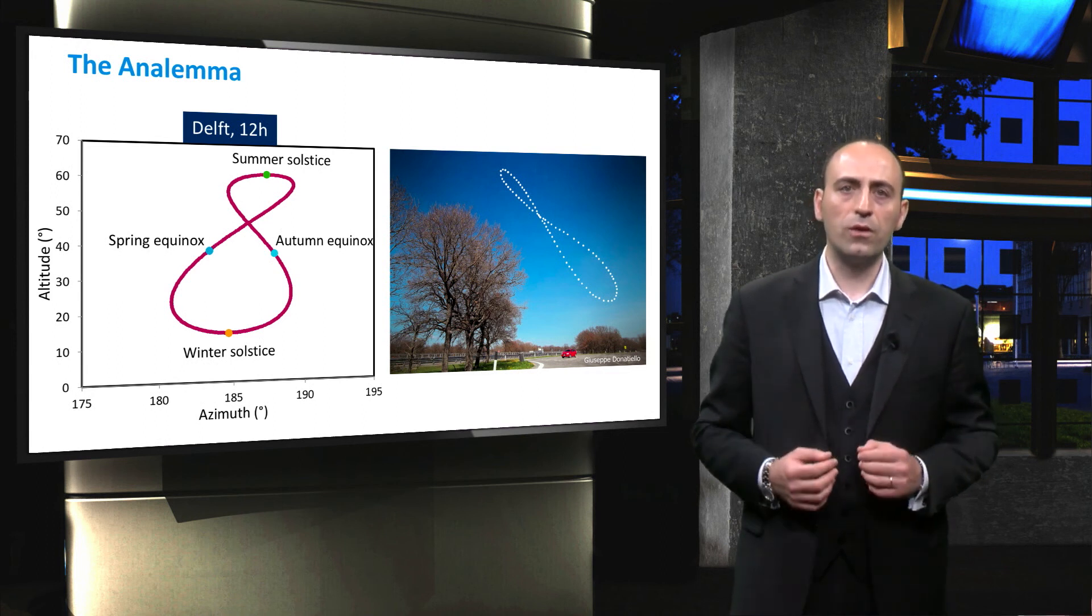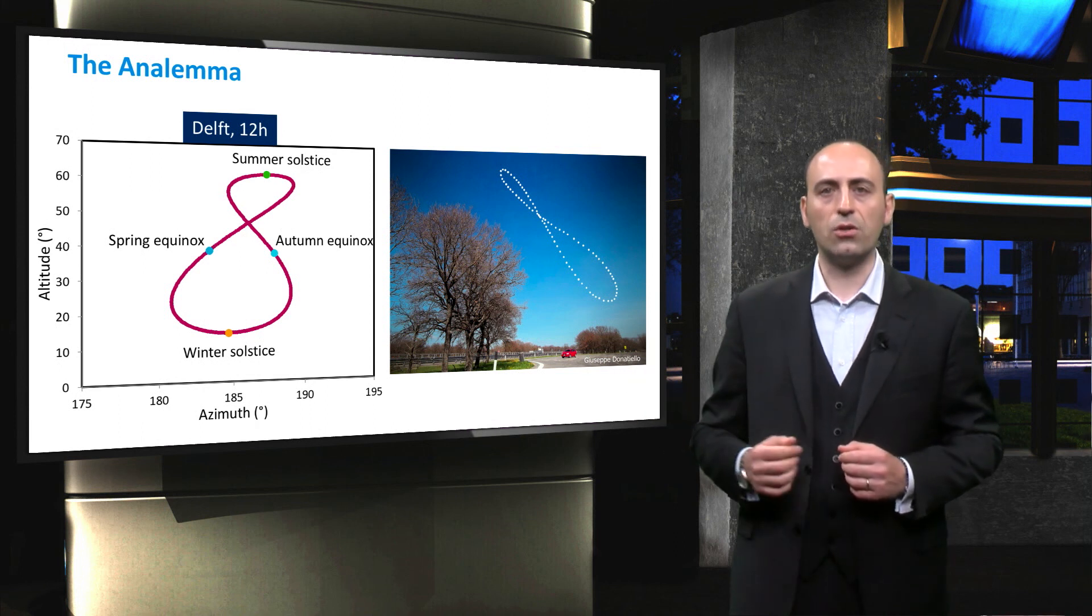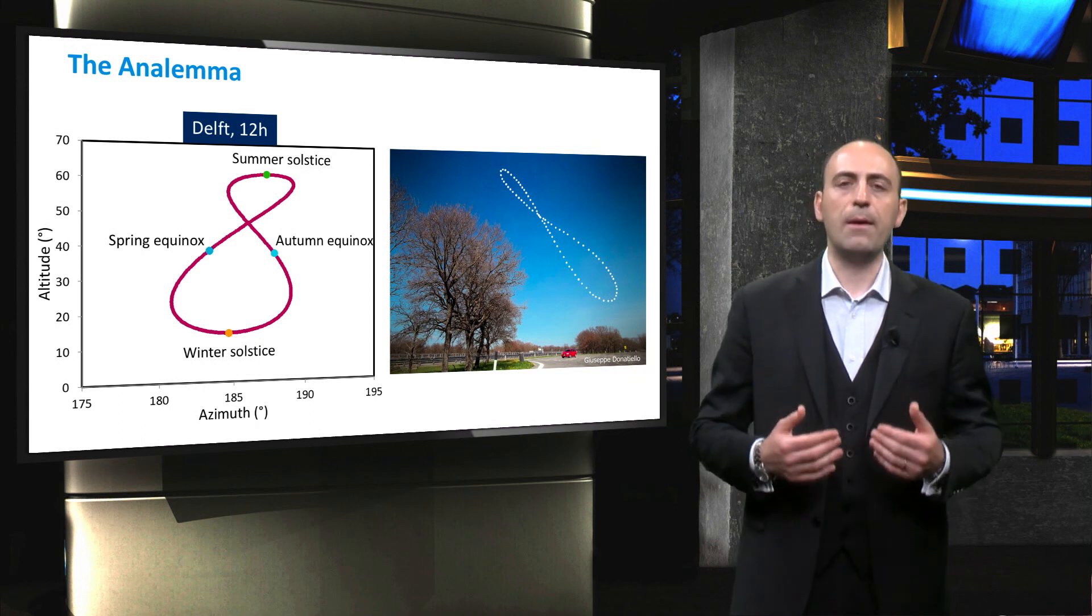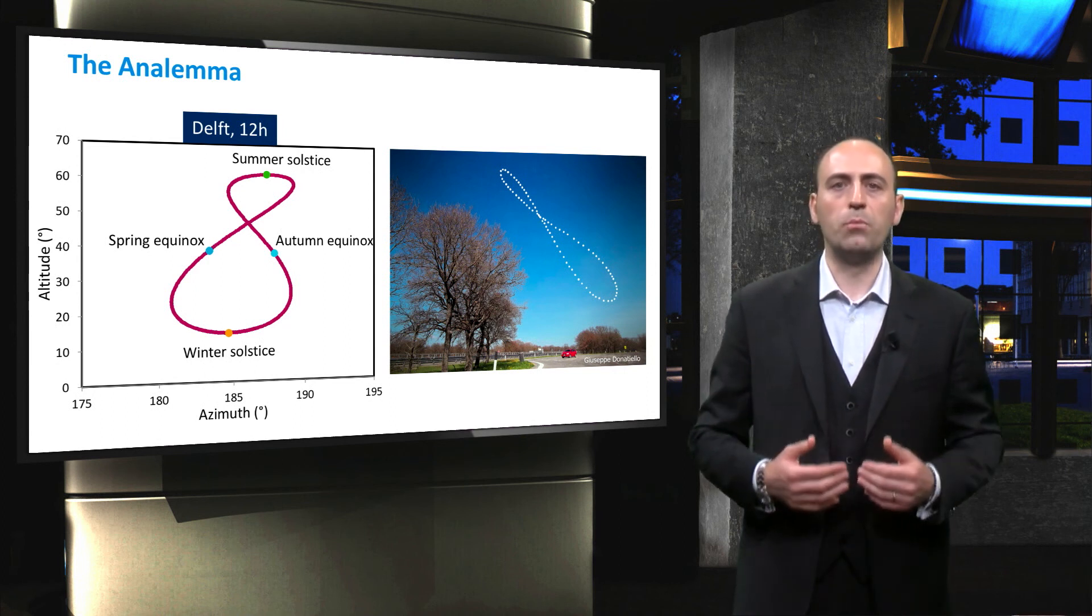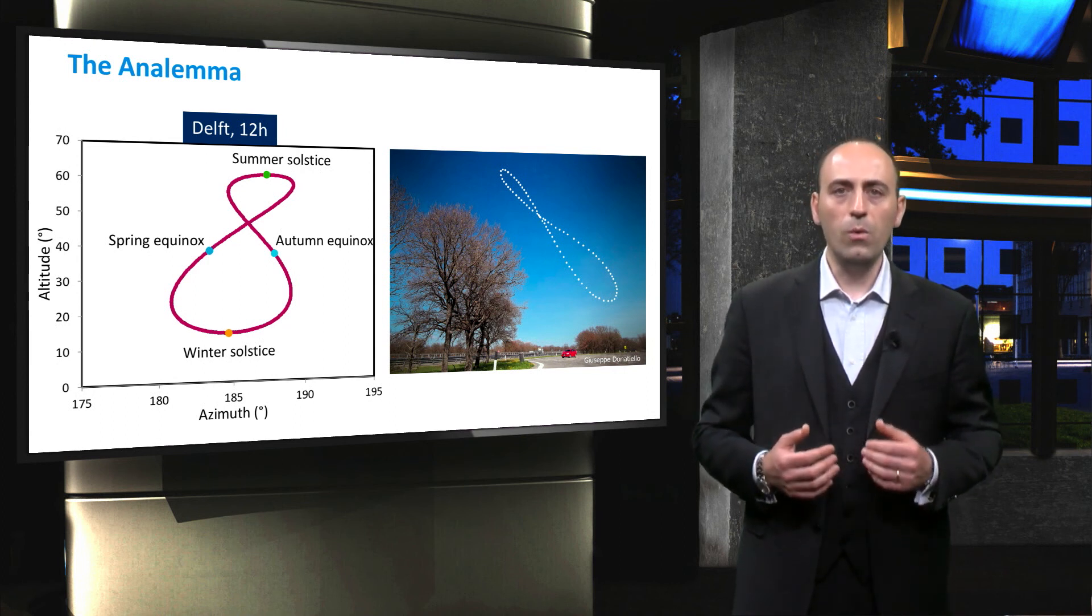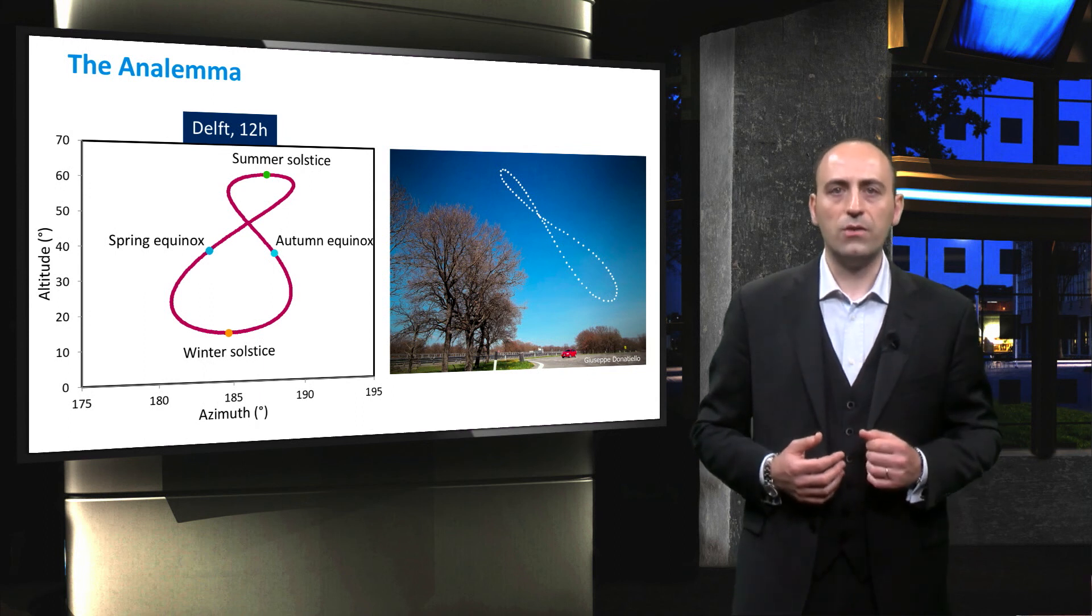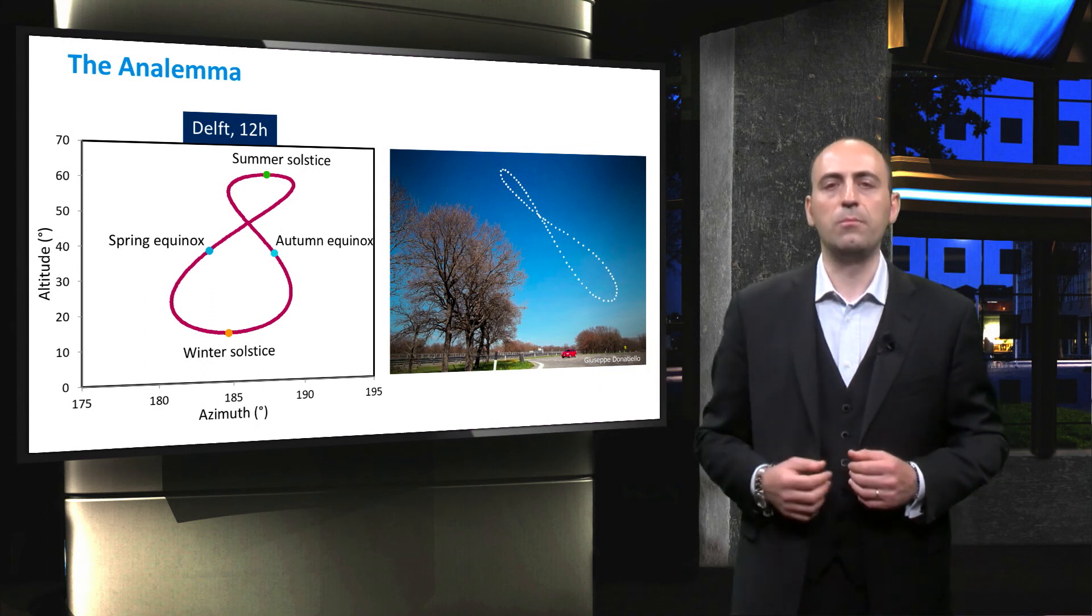It is also possible to photograph the analemma, as shown in the picture on the right, by keeping a camera at a fixed location and orientation, and taking multiple exposures throughout the year, always at the same clock time, resulting in this characteristic shape similar to the number 8.